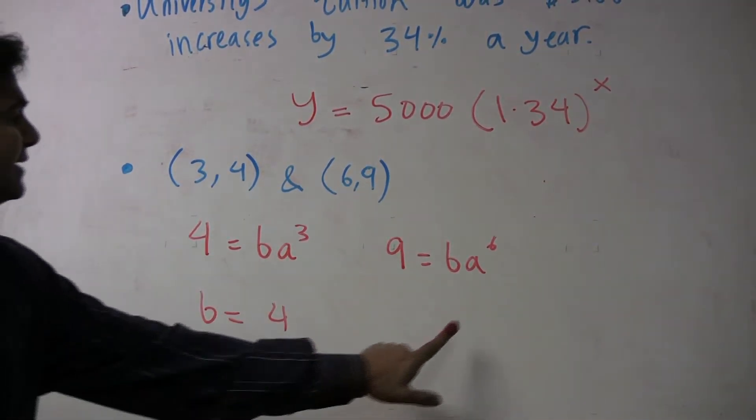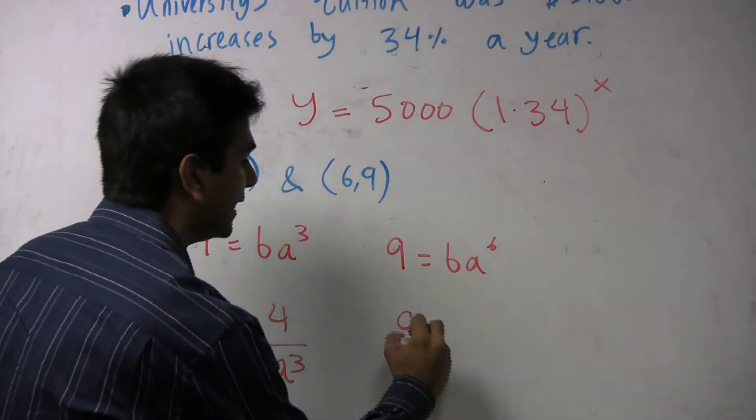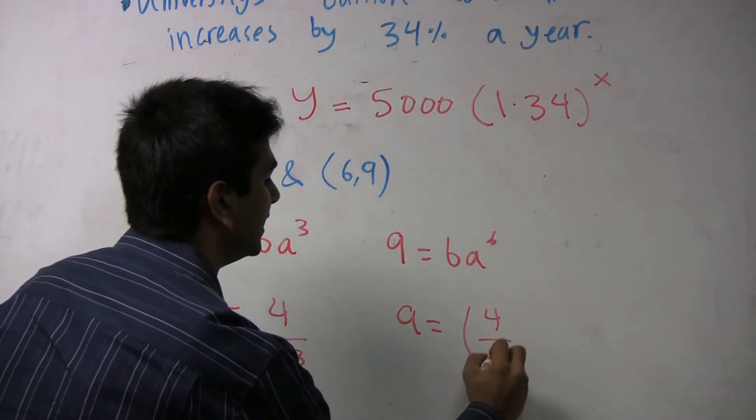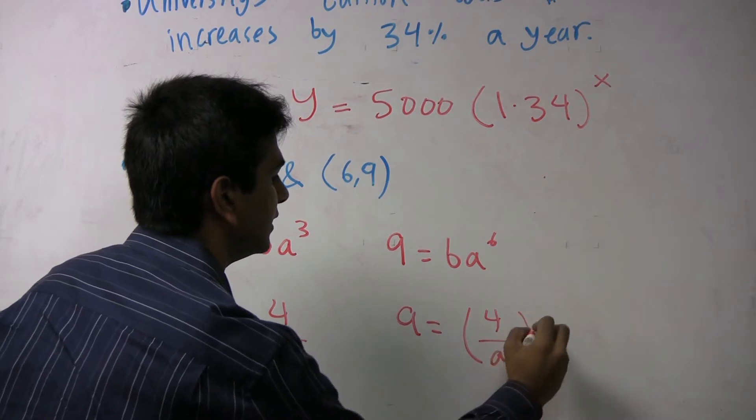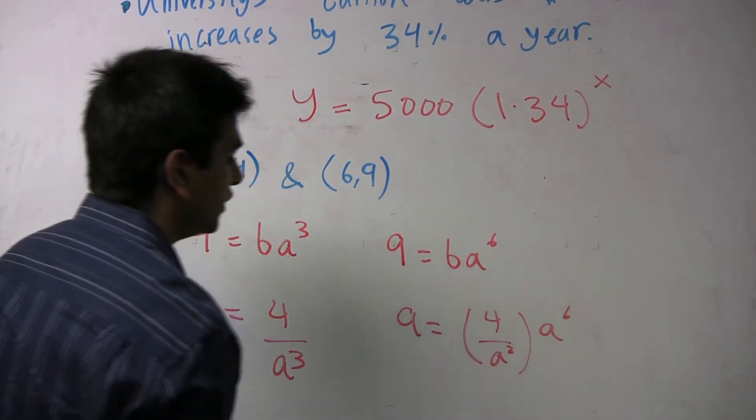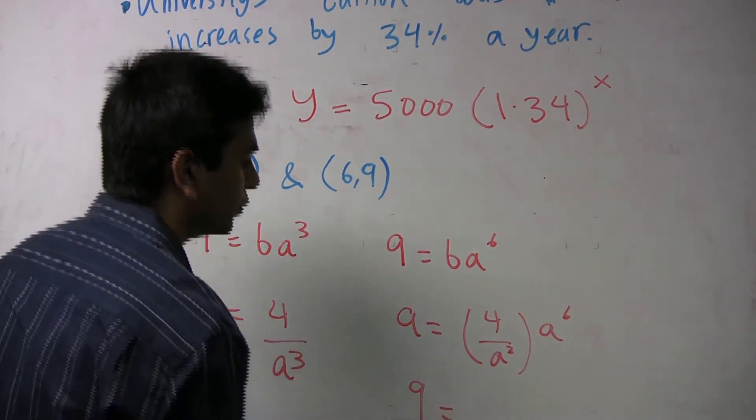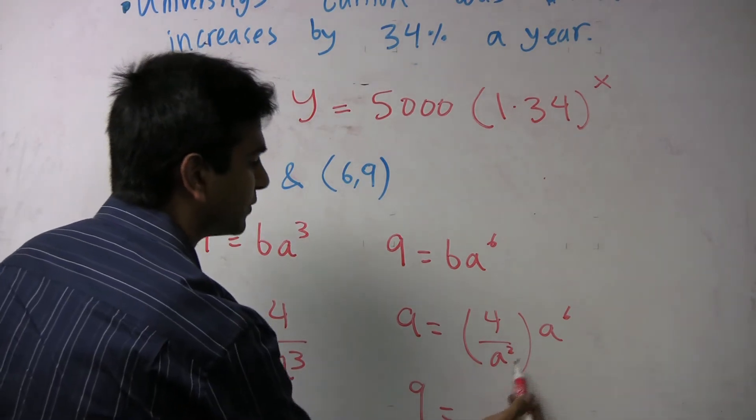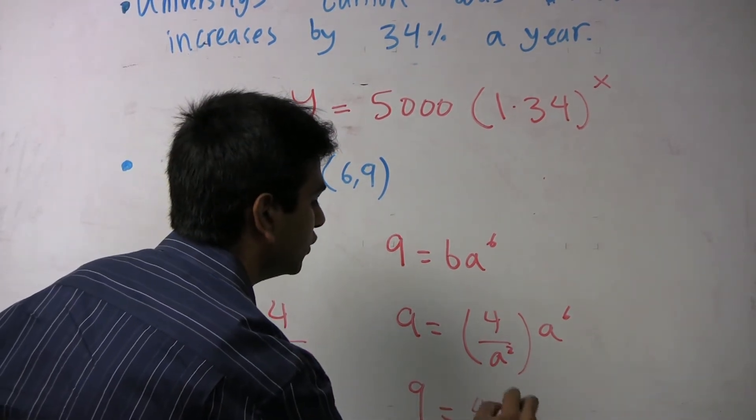Plugging this into this, we get 9 equals, now instead of b we're having 4 over a cubed, times a to the 6th. So here now, 9 will equal, as we can see the a's will cancel, for a cubed.